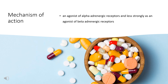Pseudoephedrine acts mainly as an agonist of alpha-adrenergic receptors and less strongly as an agonist of beta-adrenergic receptors. This agonism of adrenergic receptors produces vasoconstriction, which is used as a decongestant and as a treatment of priapism. Pseudoephedrine is also an inhibitor of norepinephrine, dopamine, and serotonin transporters. The sympathomimetic effects of pseudoephedrine include an increase in mean arterial pressure, heart rate, and chronotropic response of the right atria.